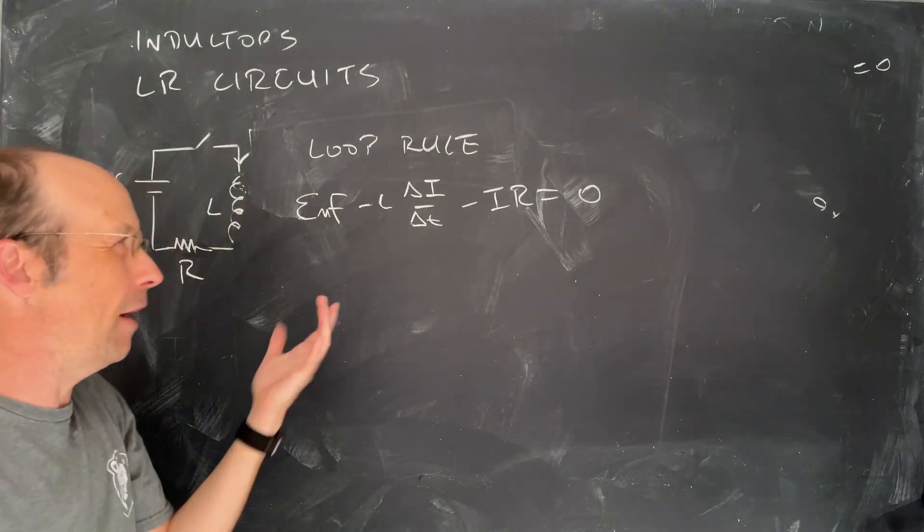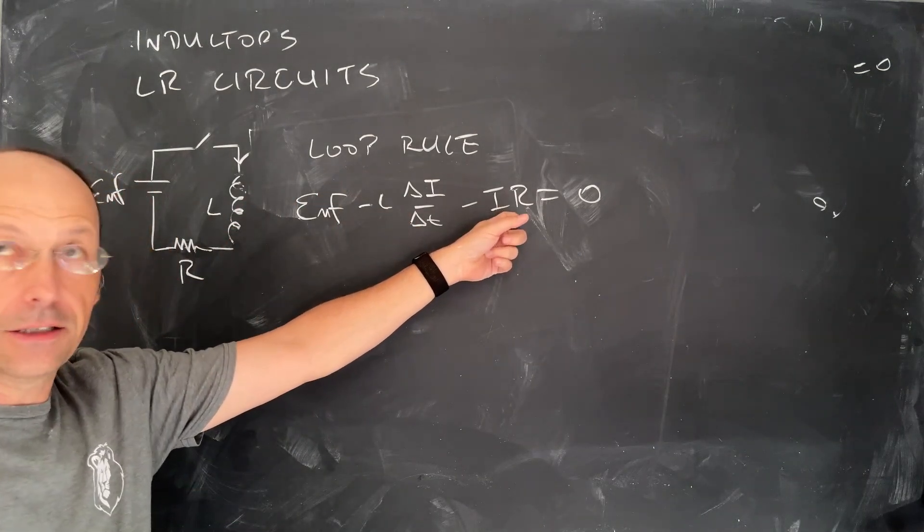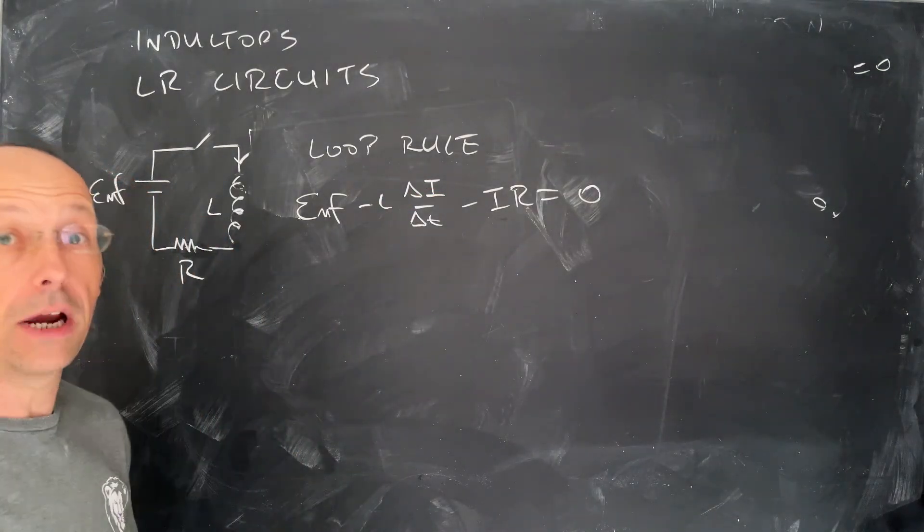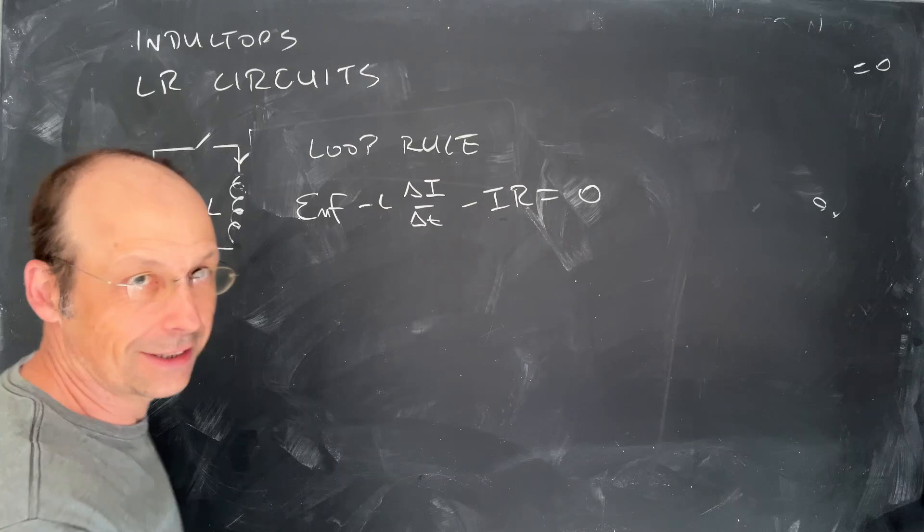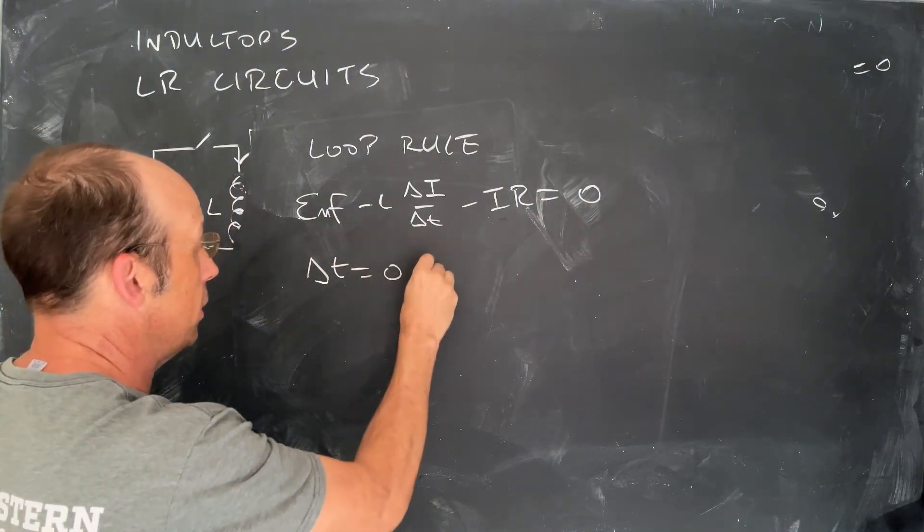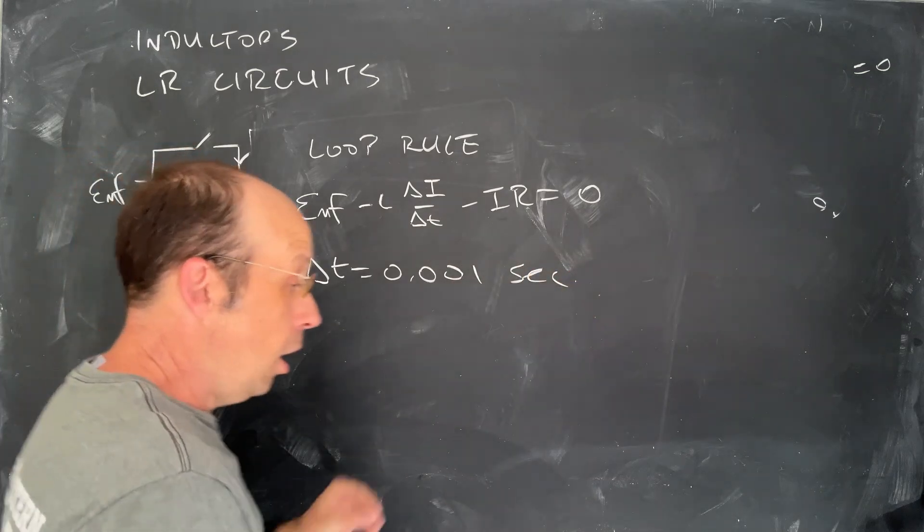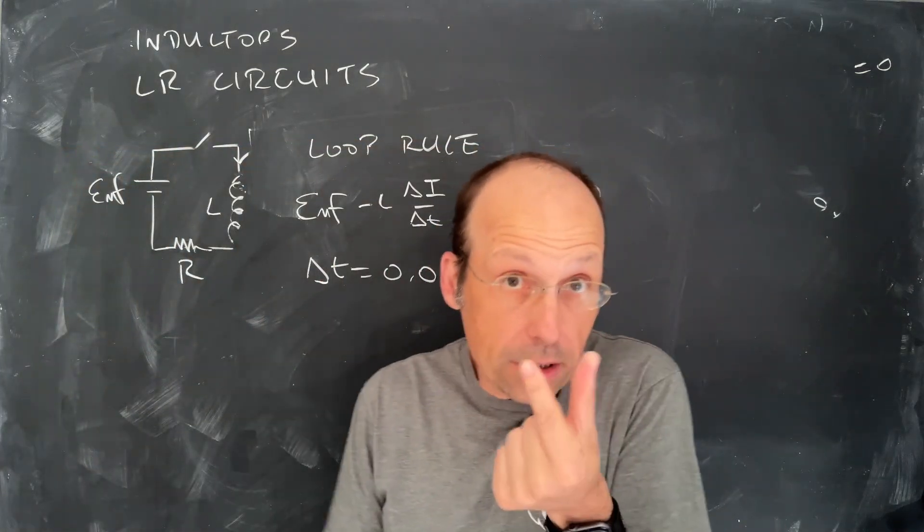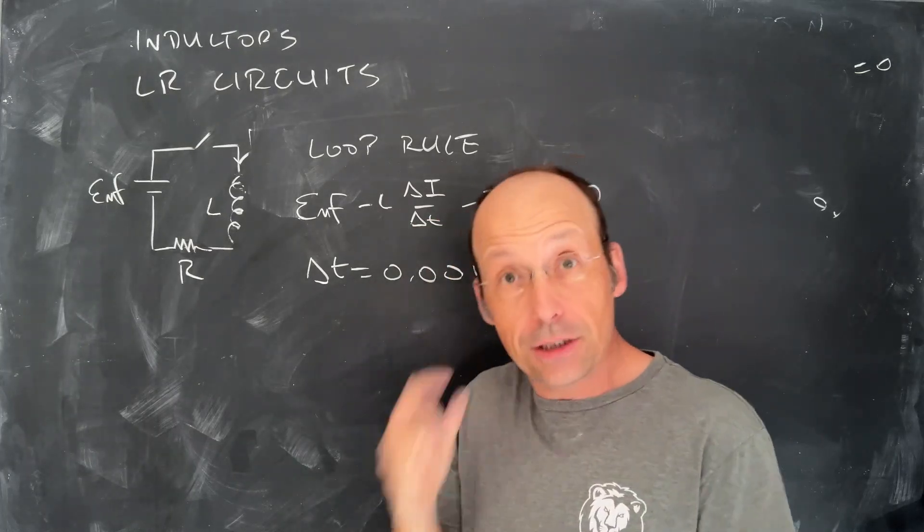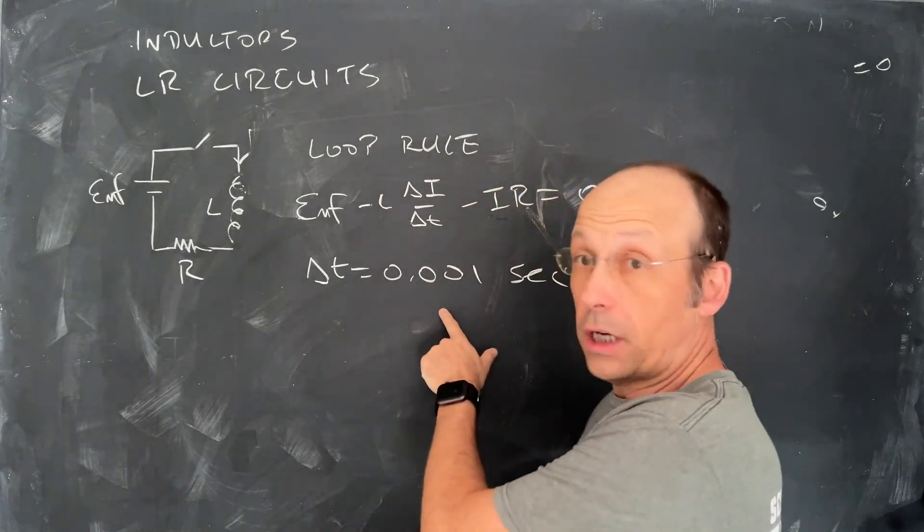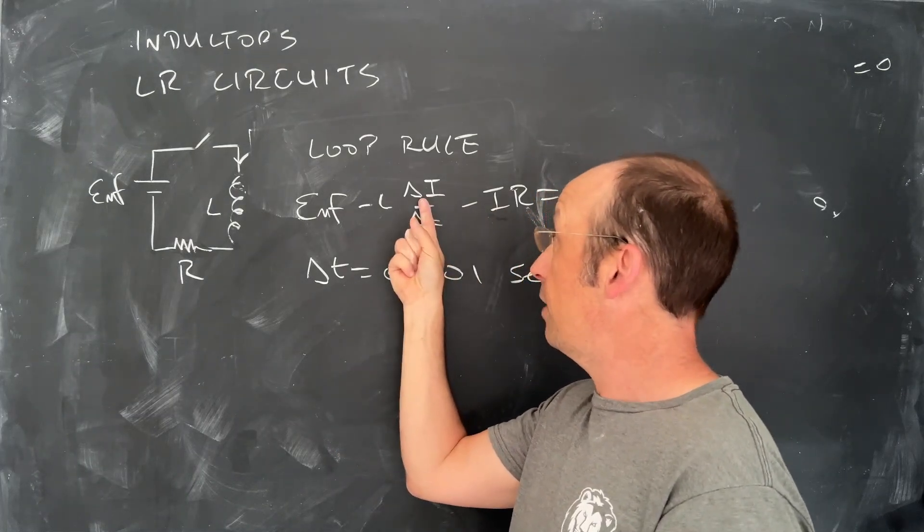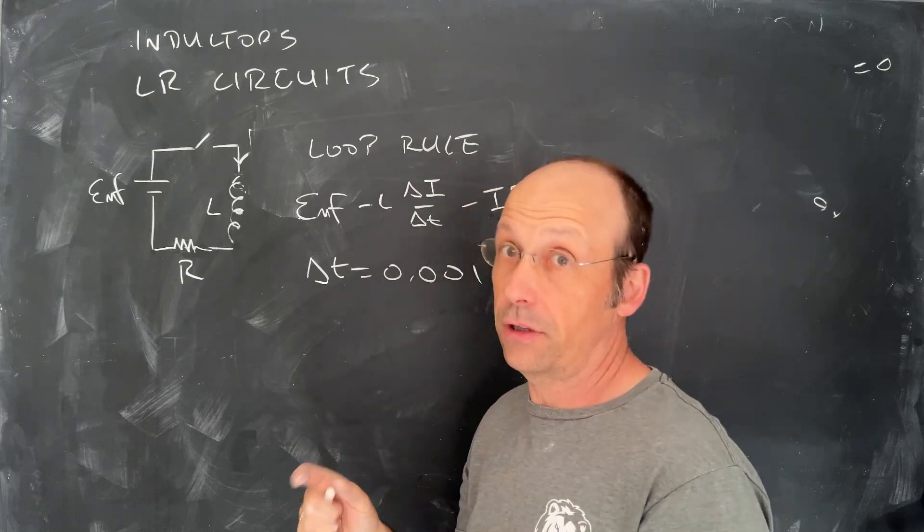So that's my equation. I can't solve that, because I depends on the change in I. So it's a really difficult situation. So what we're going to do is to break the motion into small time intervals. I'm going to use 0.001 seconds. During that short time interval, I can assume that I is constant. It's not, but I can assume that, because it's a short time interval. So if I do that, I can take that constant I and use that to solve for delta I, the change in I during that time interval.